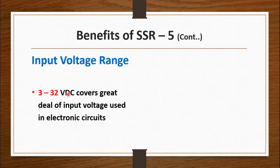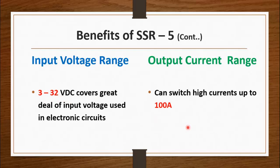The input voltage range of the SSR is quite wide — between 3 to 32 volt DC — so you don't have to change the relay model depending on your input voltage. You can use any voltage to energize this SSR. Also, the output current range of the solid state relay is very high, ranging up to 100 amperes. To drive such high-current loads you cannot find a normal electromagnetic relay — you would have to go for a contactor or some other mechanism.